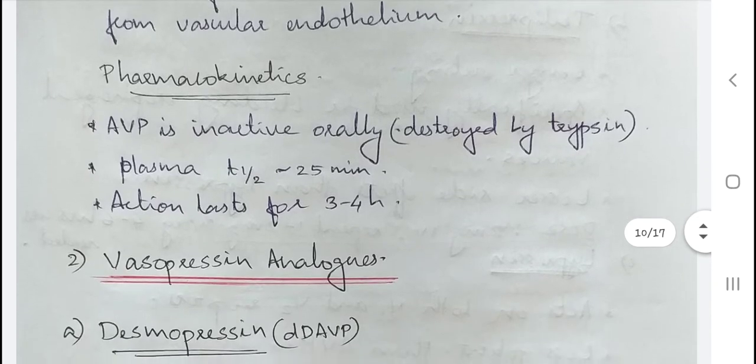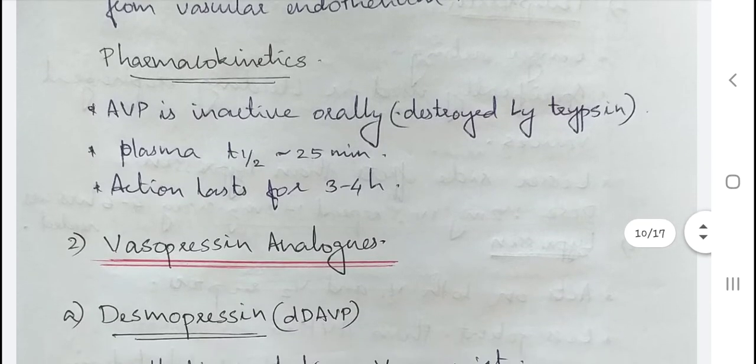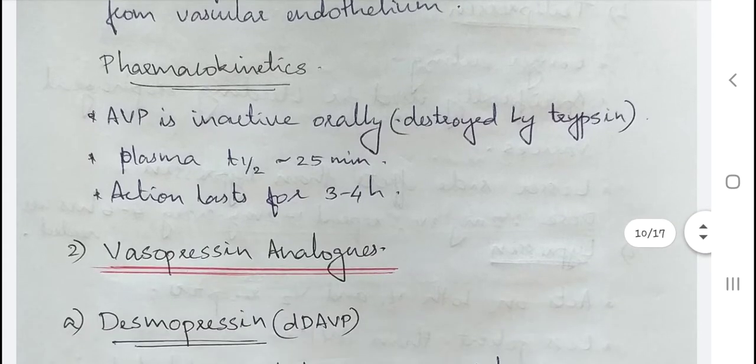Regarding pharmacokinetics, AVP is inactive orally; when taken orally it gets destroyed by trypsin. The plasma half-life is approximately 25 minutes and the action lasts for 3 to 4 hours.